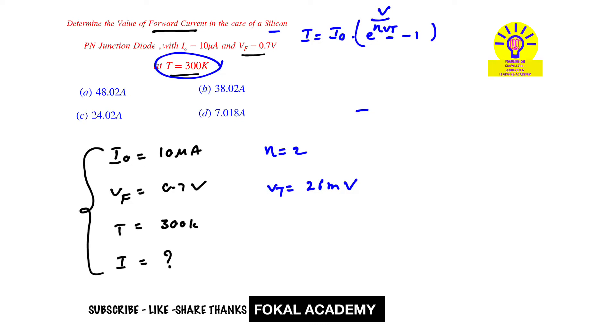Here V is forward voltage, eta is 2, Vt is 26mV, and I₀ is 10 microamperes. Now substitute: I equals 10 into 10 power minus 6 into e power V divided by eta times Vt, which is 0.7V divided by 2 times 26mV, minus 1.